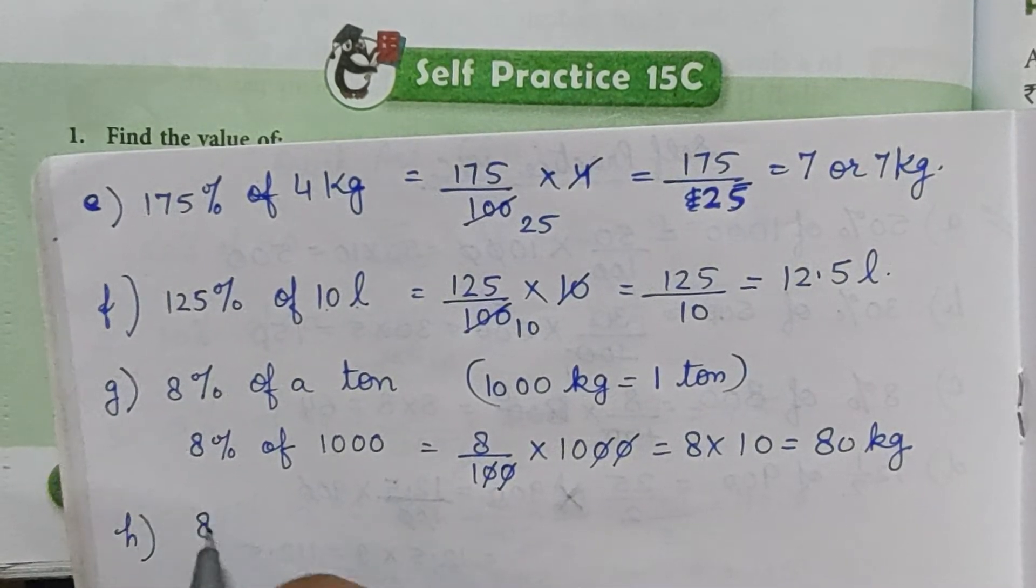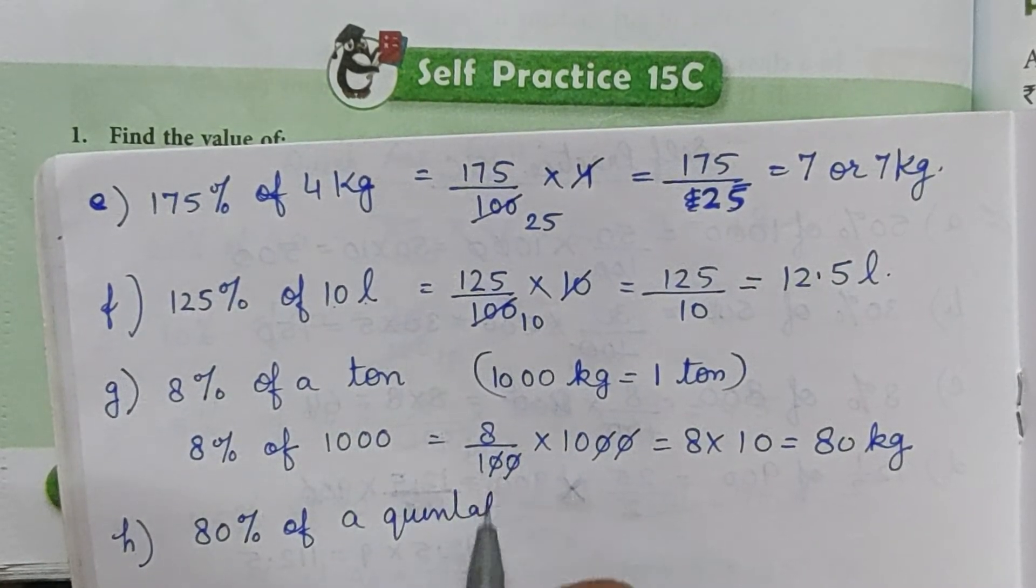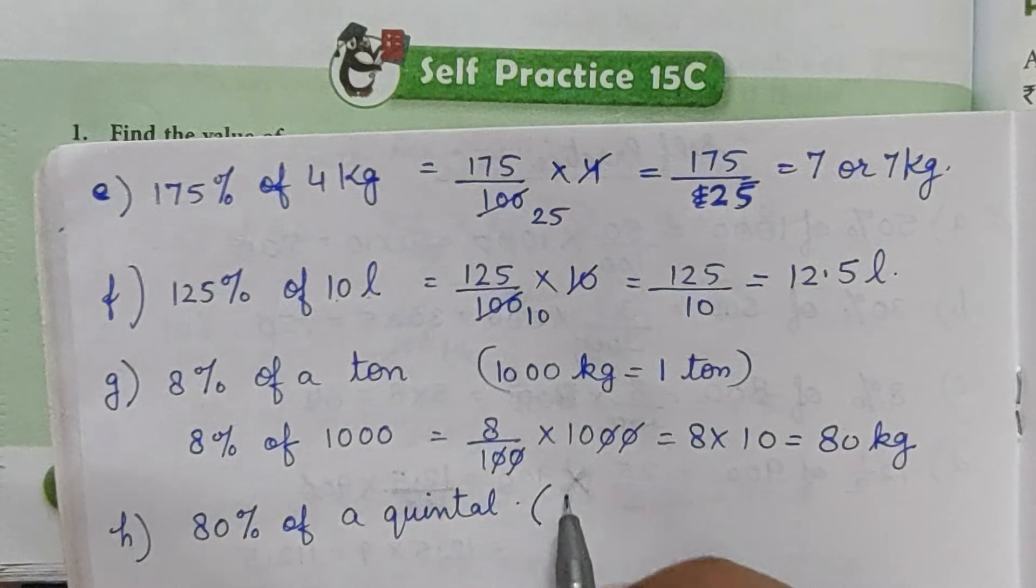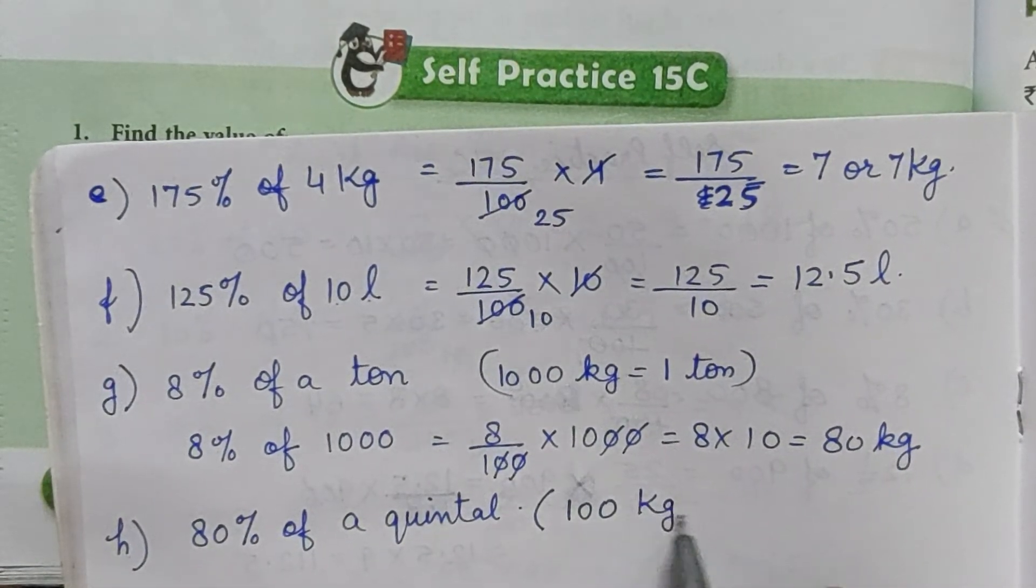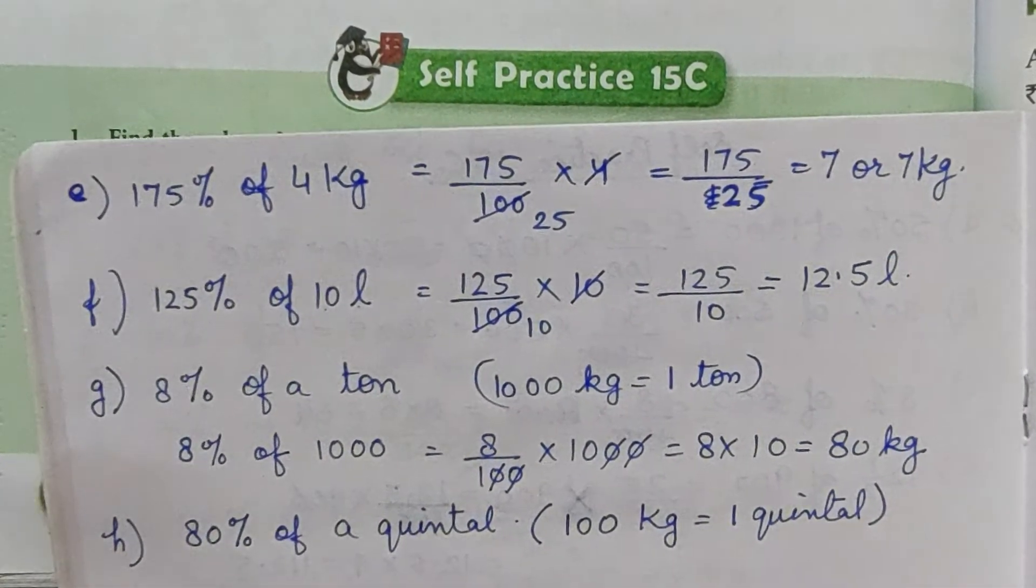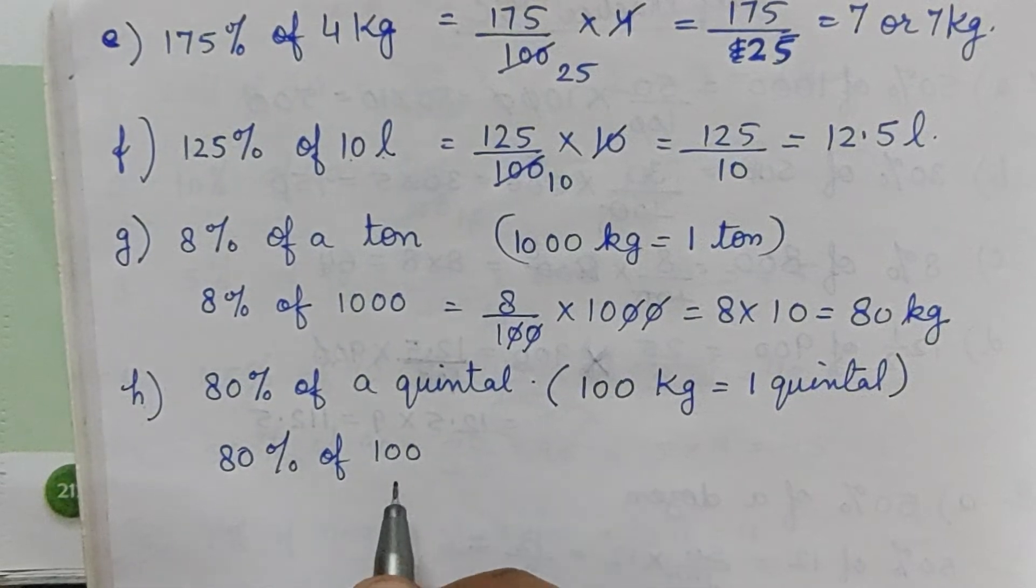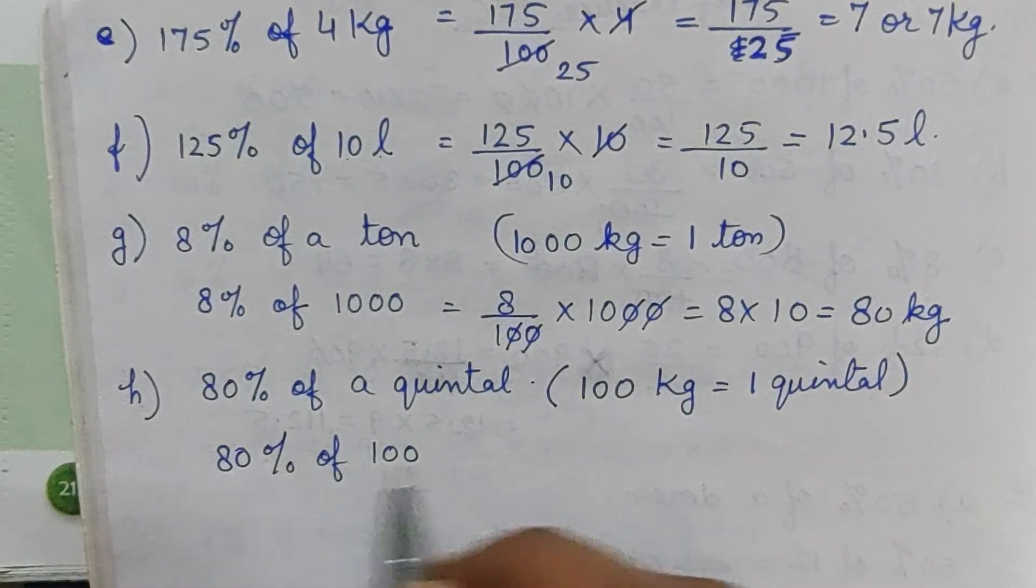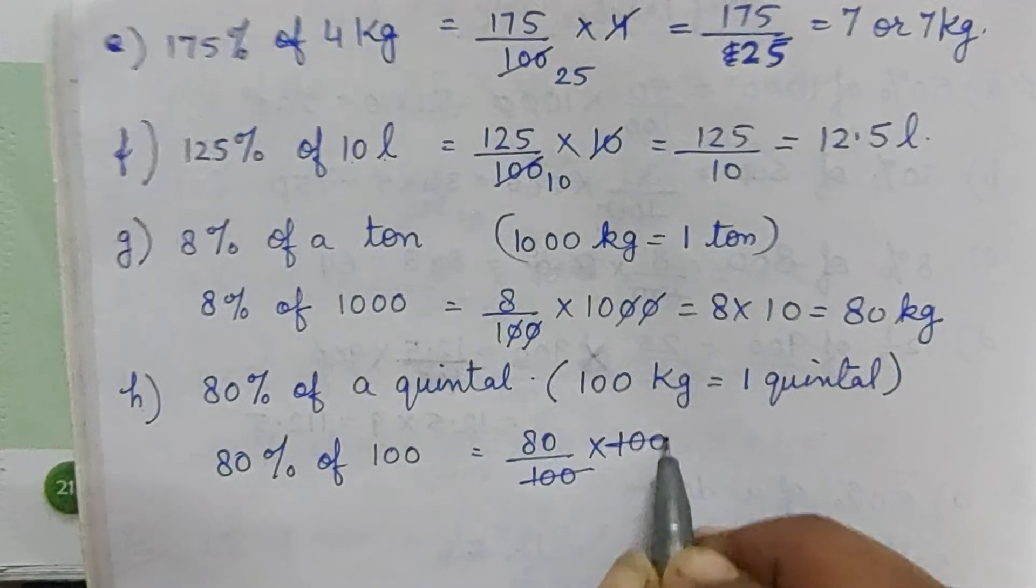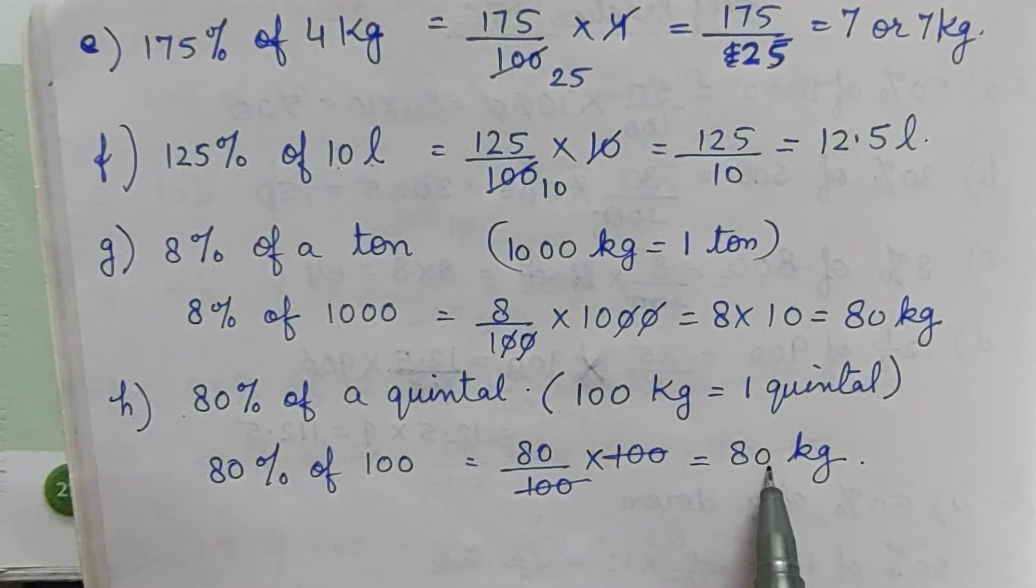Part h: 80% of a quintal. We will write here the number of kg in 1 quintal. 100 kg equals 1 quintal. So 80% of 100 kg, that's 80 by 100 into 100. 100 cancels, leaving 80 kg. So 80% of a quintal is 80 kg.